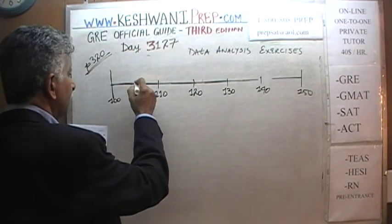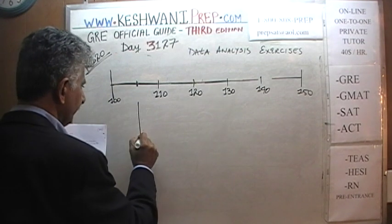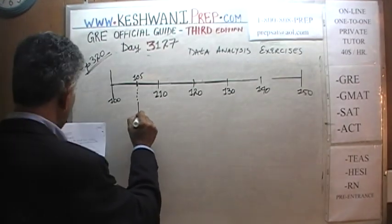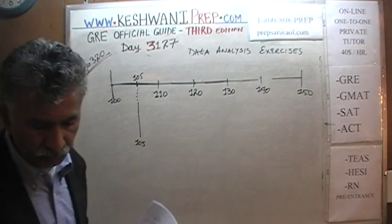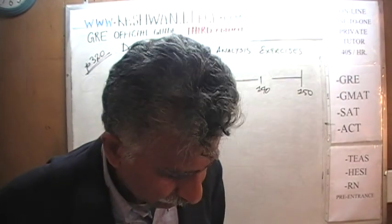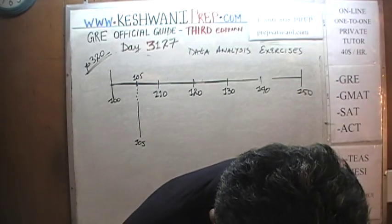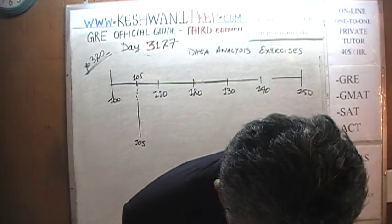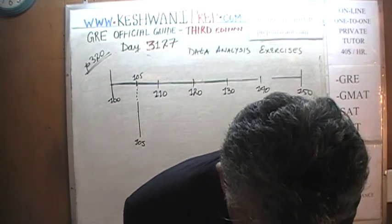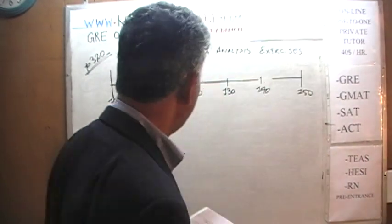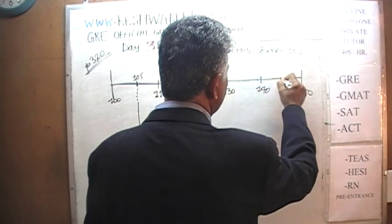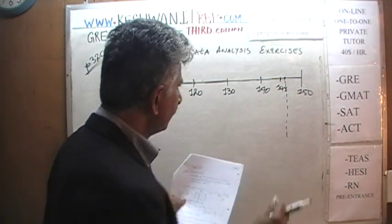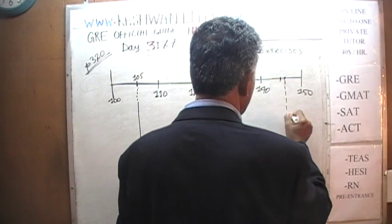This is 100, this is 110. The midway point here is 105 and that's where the story begins — at 105 is where the story begins. Looking very closely at the book, the story ends at 146. This is 140, this is 145, so 146 is somewhere here. That's where it ends.